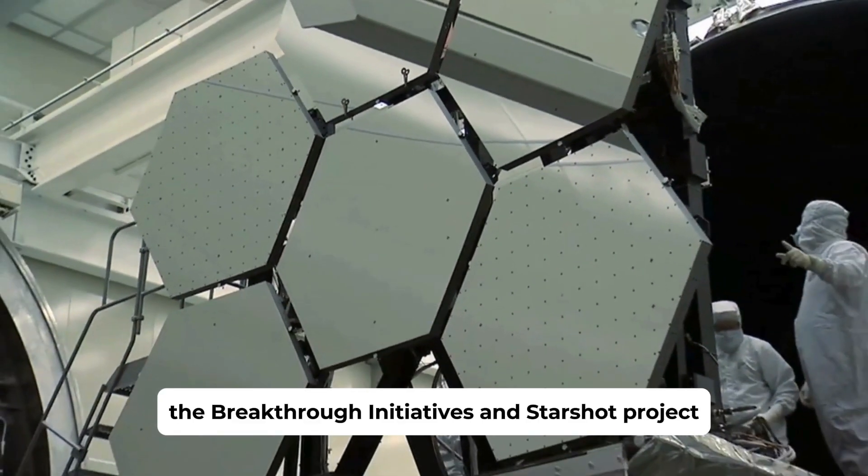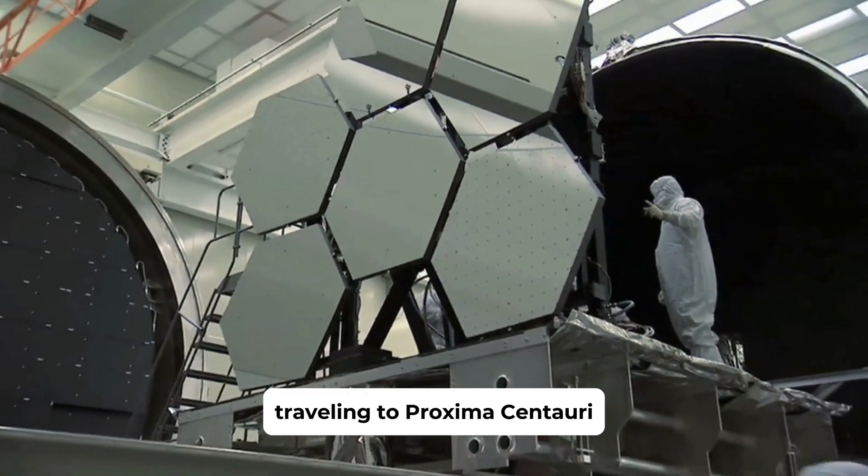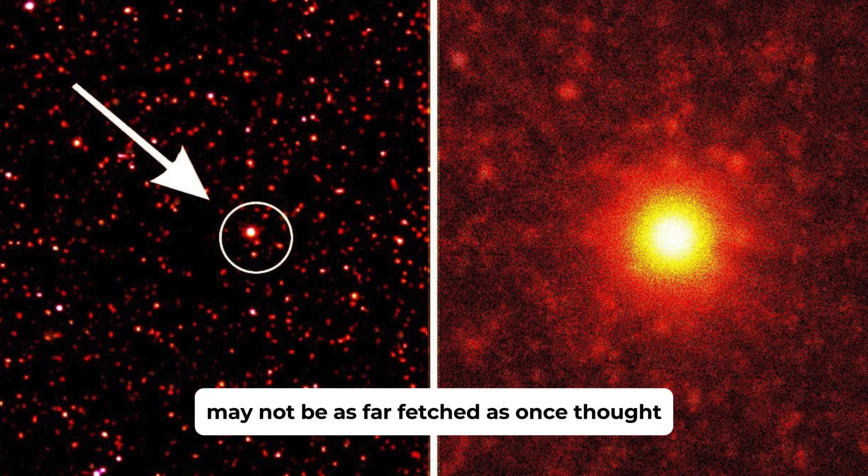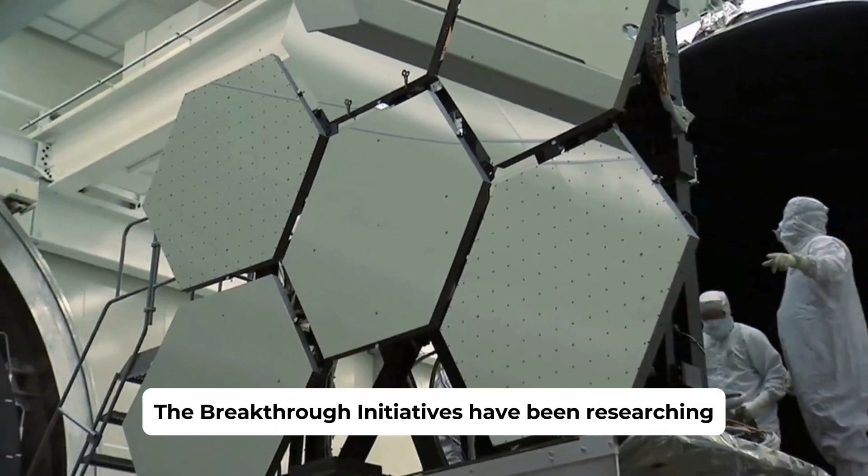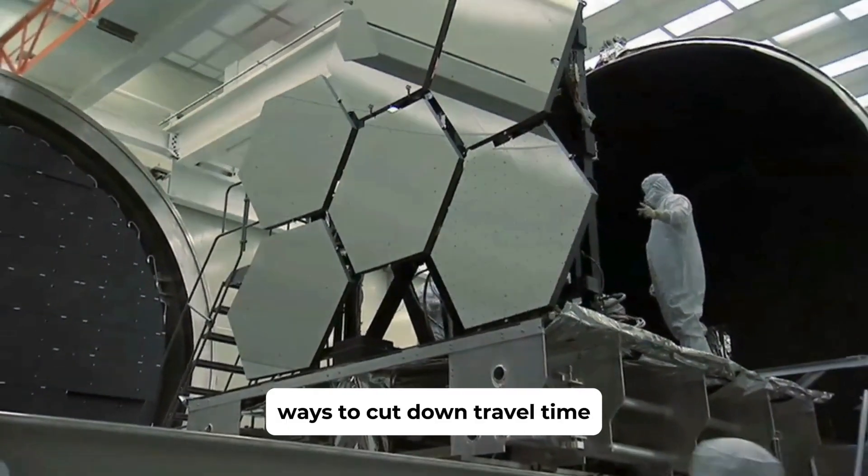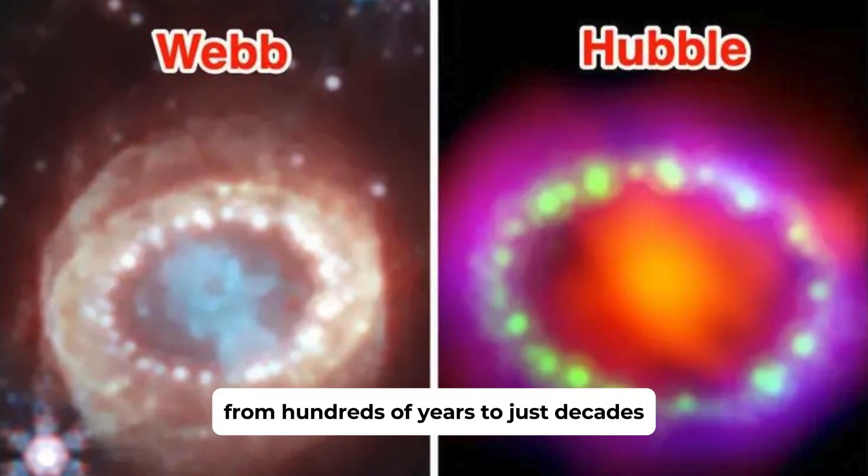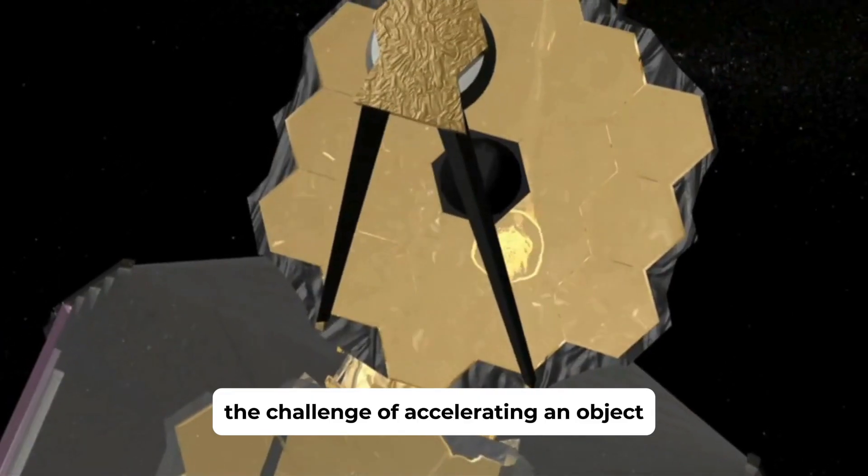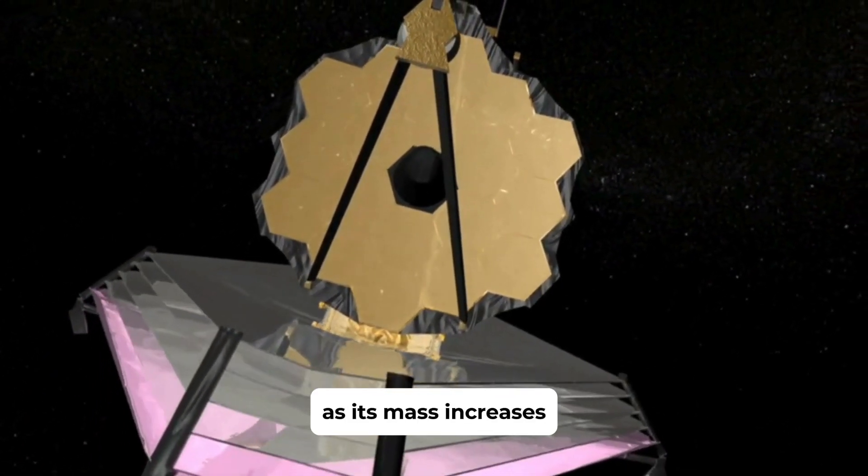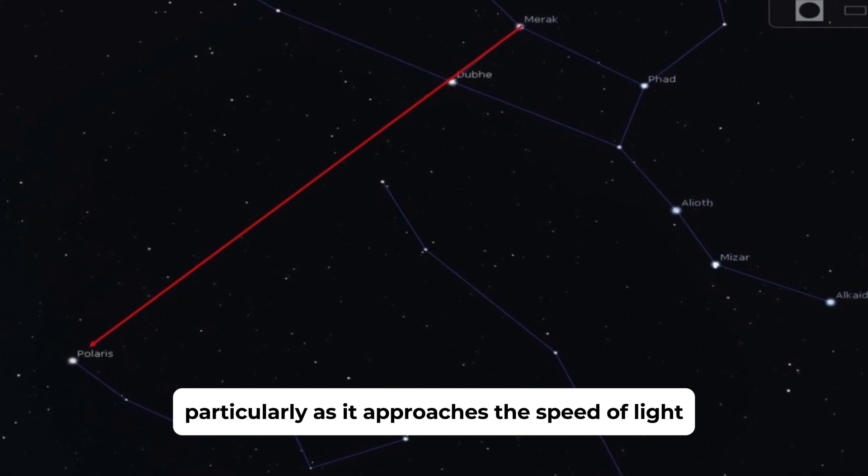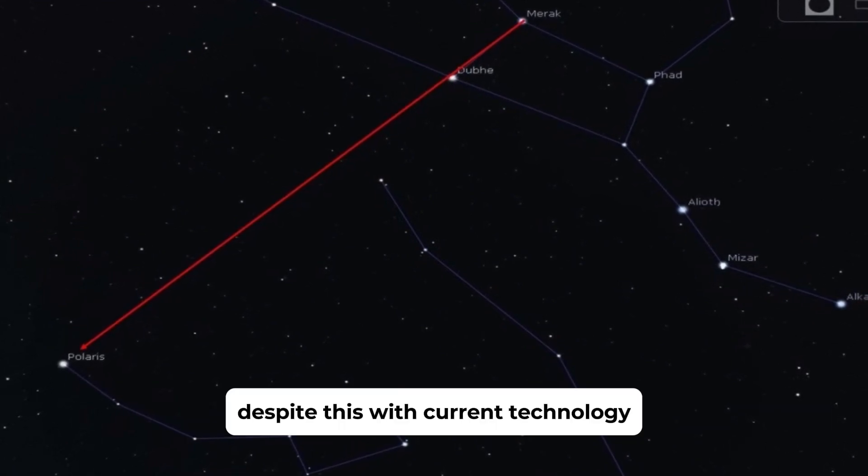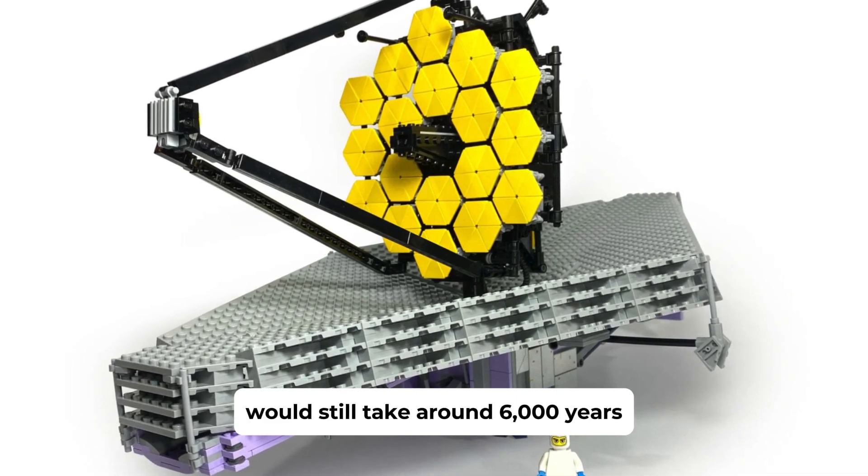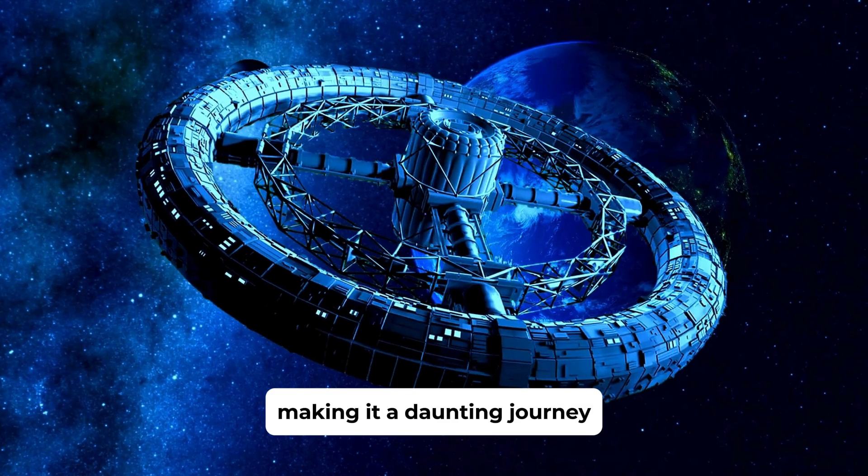The Breakthrough Initiatives and Starshot Project. Traveling to Proxima Centauri and encountering alien life may not be as far-fetched as once thought. The Breakthrough Initiatives have been researching ways to cut down travel time from hundreds of years to just decades. Recent research highlights how current technology could overcome the challenge of accelerating an object as its mass increases, particularly as it approaches the speed of light. Despite this, with current technology, traveling to Alpha Centauri would still take around 6,000 years, making it a daunting journey.